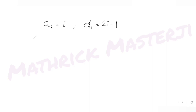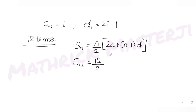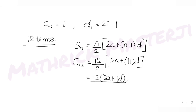Now I need to find the sum of the first 12 terms for each AP. The formula is S_n = (n/2)(2a + (n−1)d). Putting n = 12, this gives (12/2)(2a + 11d), which equals 6(2a + 11d).